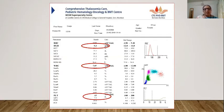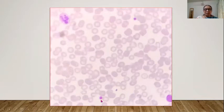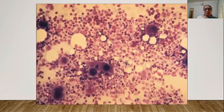Her CBC showed hemoglobin 9.3 with MCV 77, suggesting possible iron deficiency or acute blood loss from epistaxis. White cells were normal, platelets were 15,000. MPV was 7.5 but is not reliable at very low platelet counts. The peripheral smear showed large, scanty platelets with mild hypochromia. White cells and RBCs appeared normal.